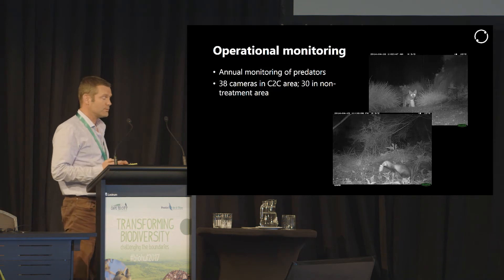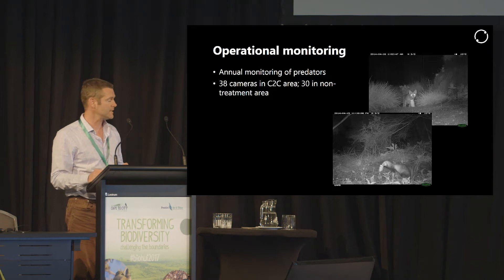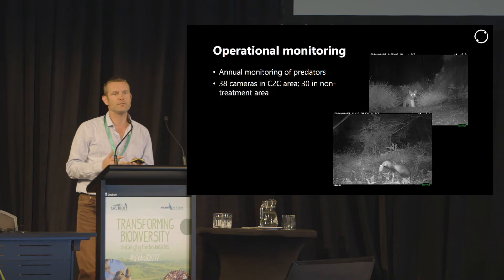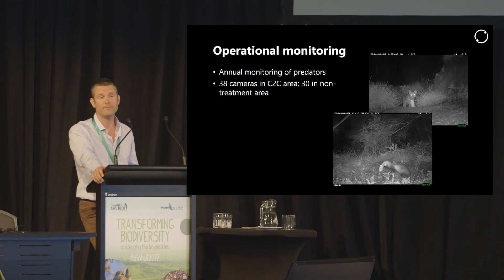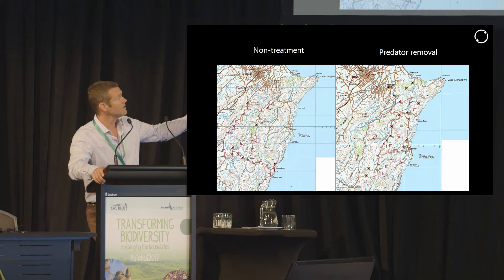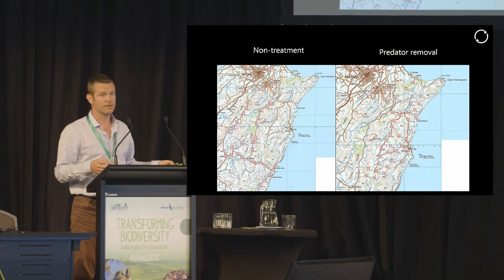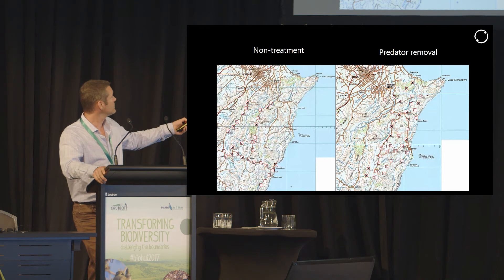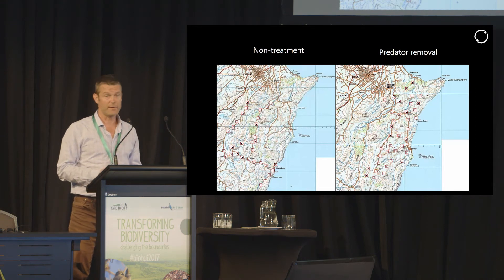Next I'd like to describe the methods we're using for the operational monitoring in Cape to City. This is an annual monitoring program — in fact, I just finished putting out the camera traps on the weekend just before we started the conference. This is a very widespread placement of cameras to monitor predator populations over the large area of Cape to City. We have 38 cameras within the Cape to City area, all spaced a minimum of two kilometres apart, so the same cat or the same stoat is very unlikely to be photographed by more than one camera. Each camera is an independent sampling unit. And then we also have 30 cameras just outside the Cape to City area at a similar spacing to give us a benchmark for comparison with the control area.